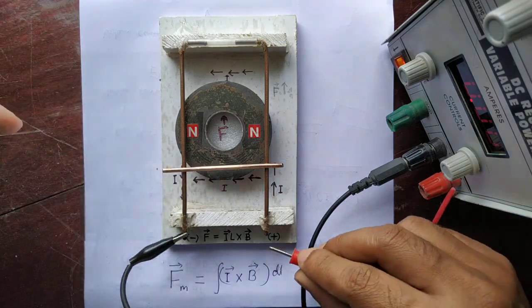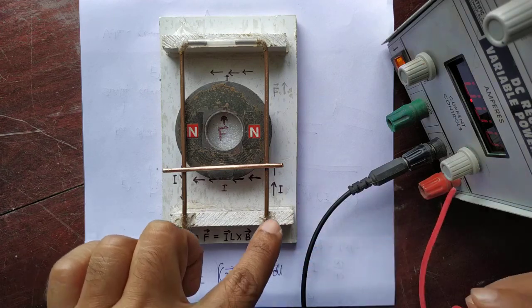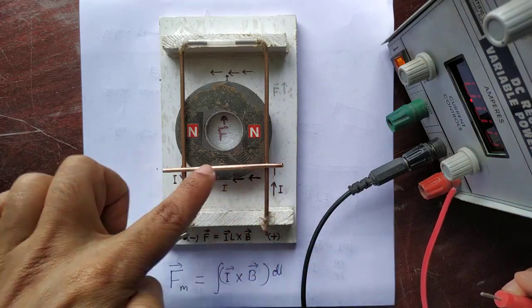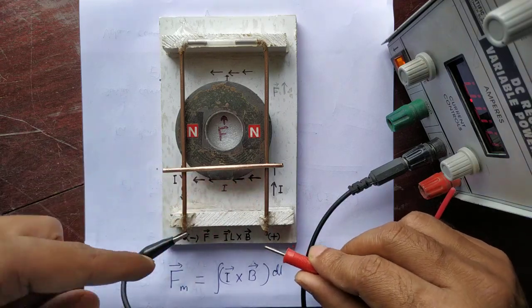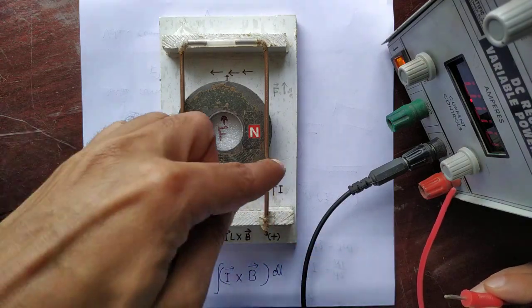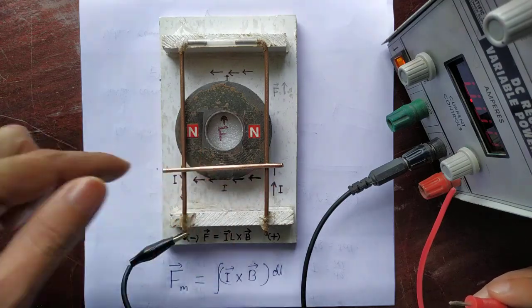So if I complete this circuit, the circuit completes in this way, through here and along this conductor. If I give a positive polarity here, the direction of current is towards the left in this direction.